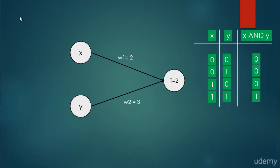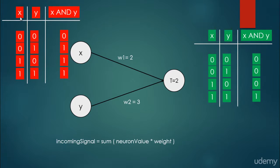The original AND logical truth table is as we have seen so far, but if we have these random weights, our neural network will produce a different table, which is not the AND logical table. When x equals 0 and y equals 1, it is going to produce 2, which is greater than or equal to the threshold, so the output layer gives us 1 — a bad guess. When x equals 0 and y equals 1, the incoming signal is 3, which is greater than the output neuron's threshold, so it produces 1. It is not going to produce the right AND logical table.